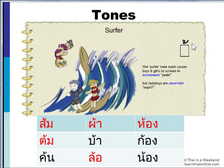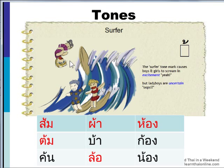Now this tone mark looks a little bit like a figure surfing on a surfboard down a wave. That's why I call it the surfer or surfing tone mark, and it's kind of the inverse of the dagger. When boys and girls surf, they surf down the wave and they scream in excitement — Yeah! Wow! But ladyboys, being somewhat clumsy creatures, the wave throws them up in the air, they lose their balance, and they go whoops — in an uncertain tone.